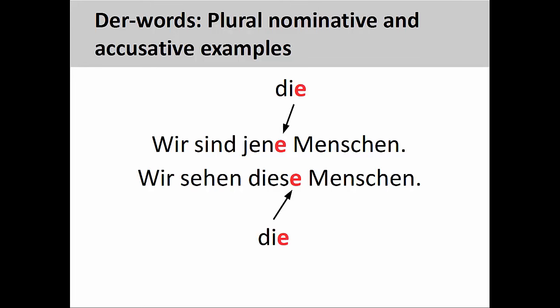Now let's take a look at the plural forms. In the first sentence, wir sind jene Menschen (we are those people), you can see that the -e ending on jen resembles the plural definite article in the nominative case. And in the second sentence, wir sehen diese Menschen (we see these people), you can see that the -e ending on dies resembles the plural definite article in the accusative case.